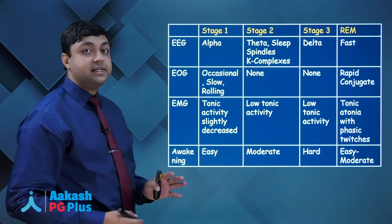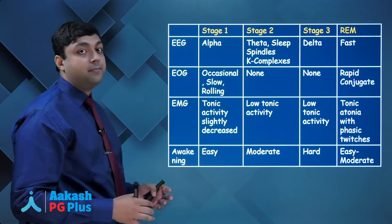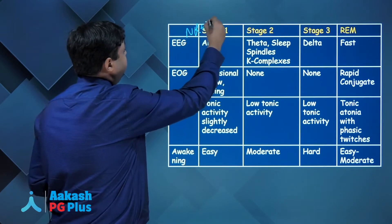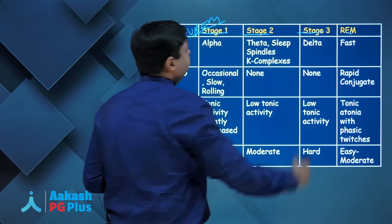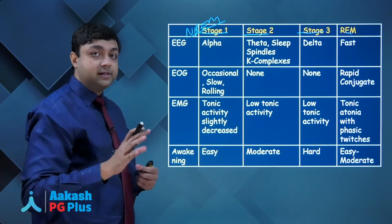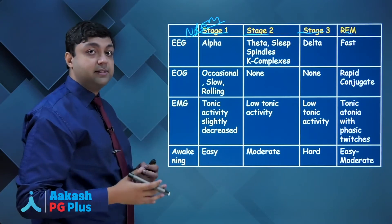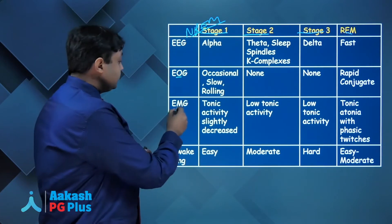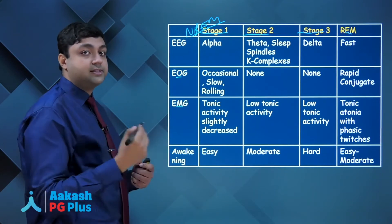This is what we call the sleep architecture. Sleep is divided broadly into two stages: the non-rapid eye movement or NREM sleep, which has three stages, and the rapid eye movement or REM sleep. These stages differ in essential aspects — primarily the EEG activity, the EOG (electrooculogram) activity, the muscle tone, and how easily a person can be aroused from these stages.